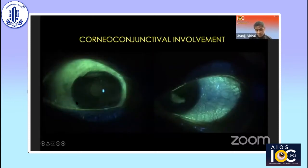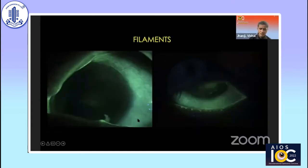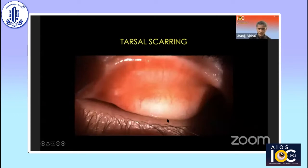This shows corneal and conjunctival involvement — the amount of staining is just unprecedented, too extensive on the cornea, with significant conjunctival involvement as well. Another patient shows conjunctival and corneal staining with filaments. This patient has chronic, almost burnt-out ocular GVHD. The patient has been stable on serum eye drops with a massive corneal scar and tarsal scarring. The glands are obliterated and subtarsal fibrosis takes over in these patients, making the dryness almost permanent.